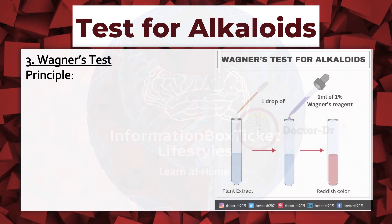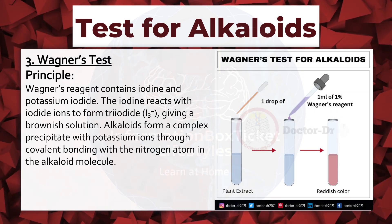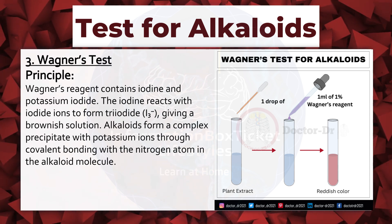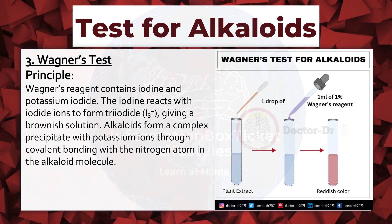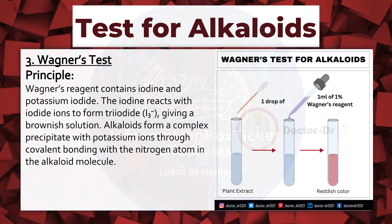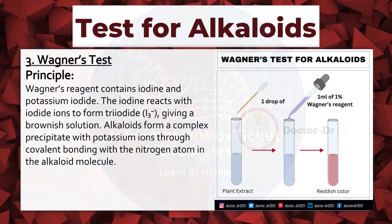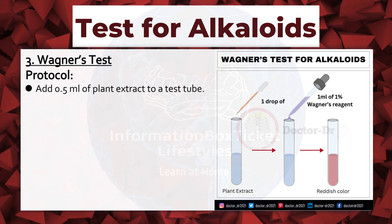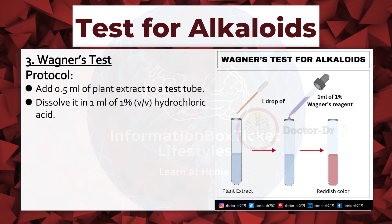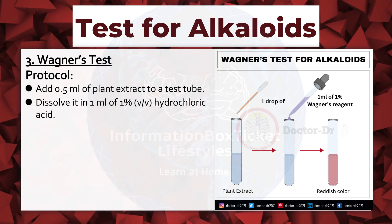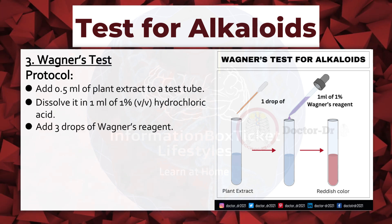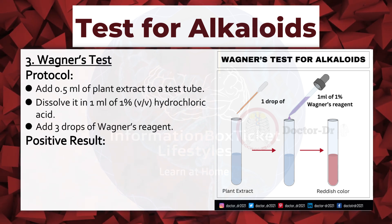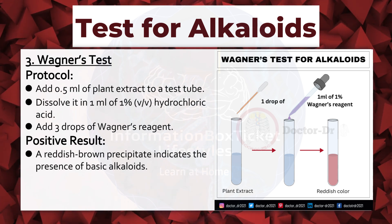Wagner's Test. Principle: Wagner's reagent contains iodine and potassium iodide. The iodine reacts with iodide ions to form triiodide, giving a brownish solution. Alkaloids form a complex precipitate with potassium ions through covalent bonding with the nitrogen atom in the alkaloid molecule. Protocol: add 0.5 ml of plant extract to a test tube, dissolve it in 1 ml of 1% v/v hydrochloric acid, and add 3 drops of Wagner's reagent. Positive result: a reddish-brown precipitate indicates the presence of basic alkaloids.